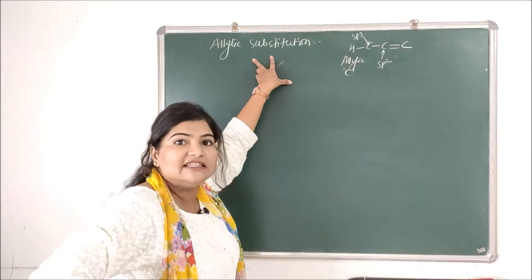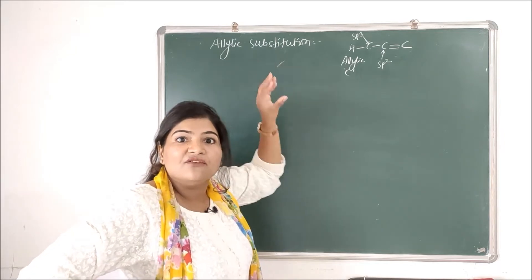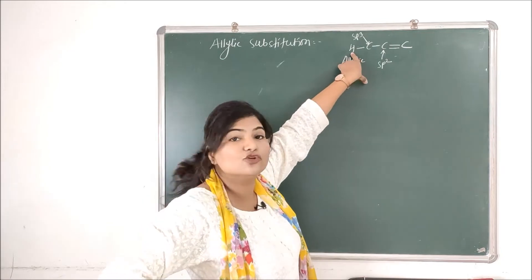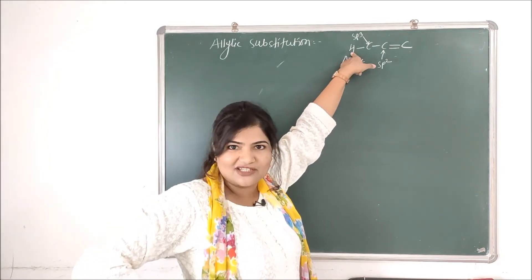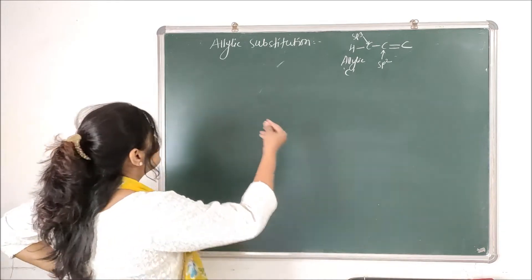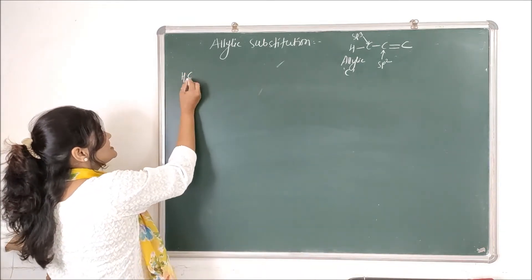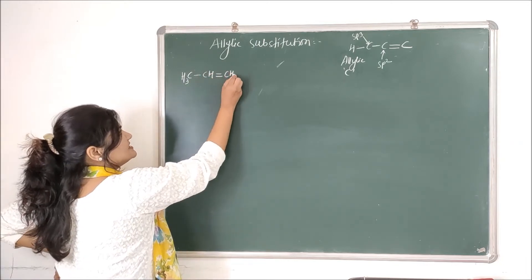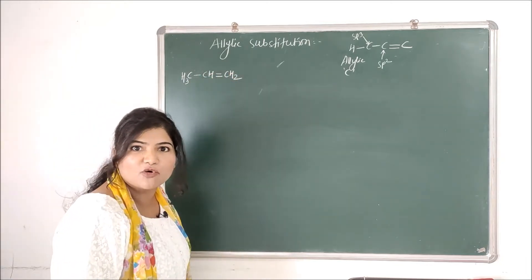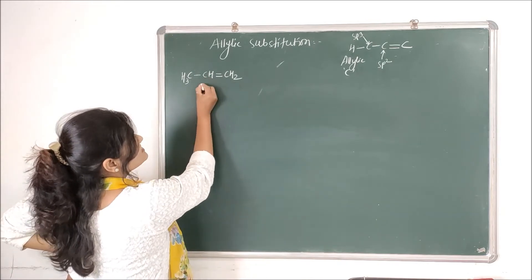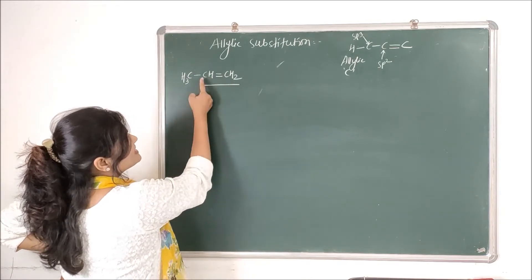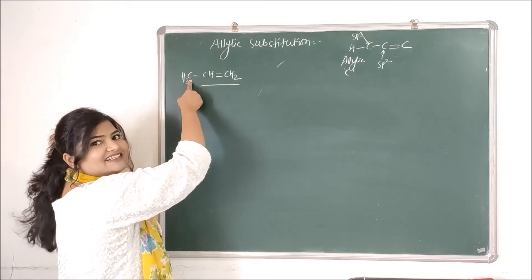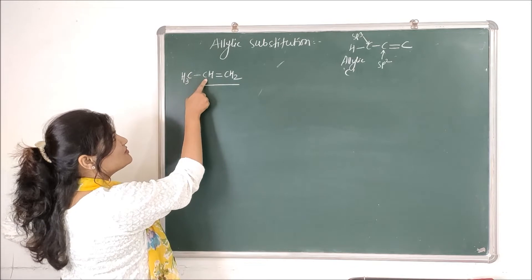In allylic substitution, we will be substituting this allylic hydrogen by a halogen atom. Let's take an example of propene: CH₃CH=CH₂. This is our propene molecule. You can see this is the double bonded unsaturated system. The sp2 hybridized carbons are these two, and this carbon is the allylic carbon because it is a neighbor of such carbons.